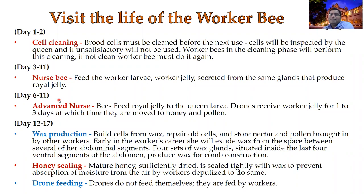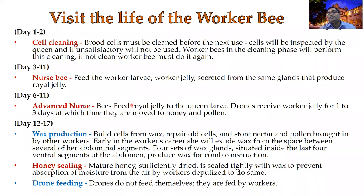From six to eleven days, bees become advanced nurse bees. Bees feed royal jelly to queen larvae. Young nurse bees cannot feed the future royal queen — only advanced nurse bees who have reached six to eleven days of age can attend the future queen's larva. Drones also receive worker jelly for one to three days during this period and are then moved to honey and pollen feeding.